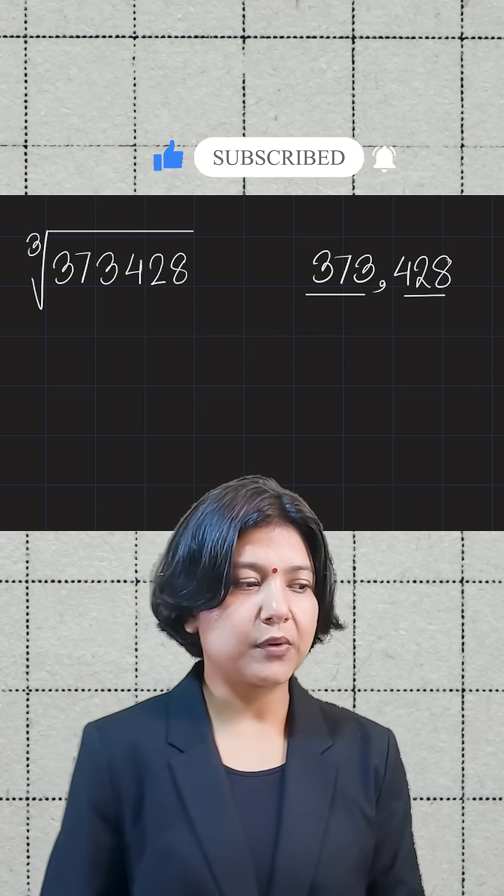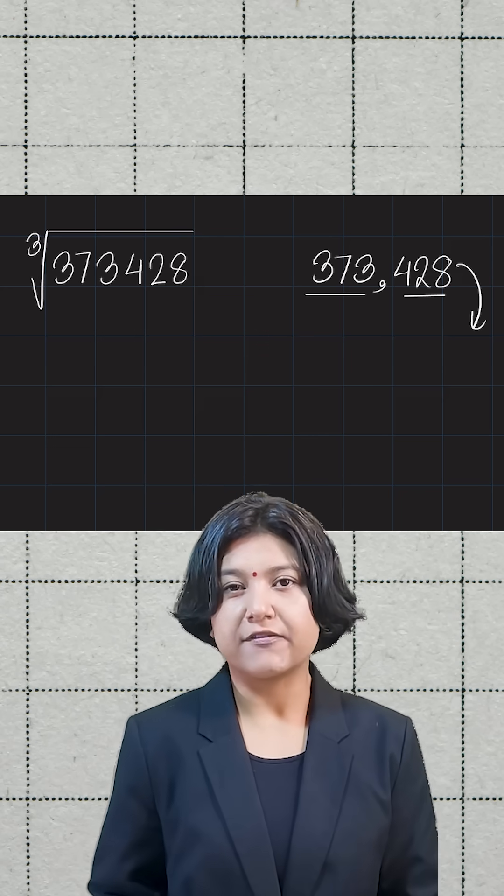You see, 428 is again ending with 8. If a perfect cube number ends with 8, the cube root number must end with 2. So I'm going to plug in that value.